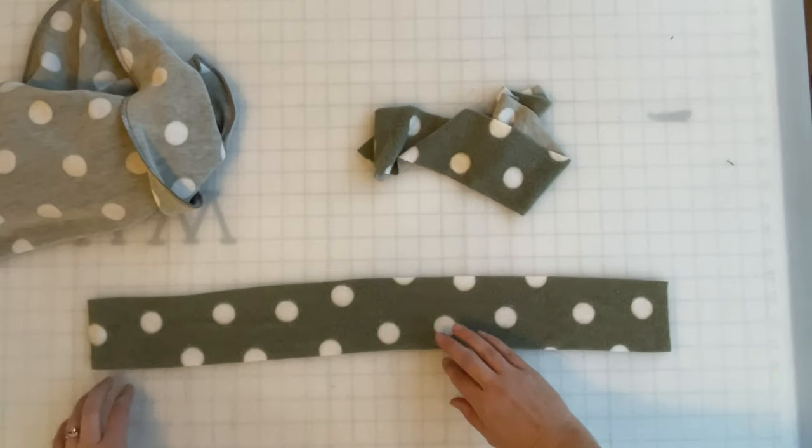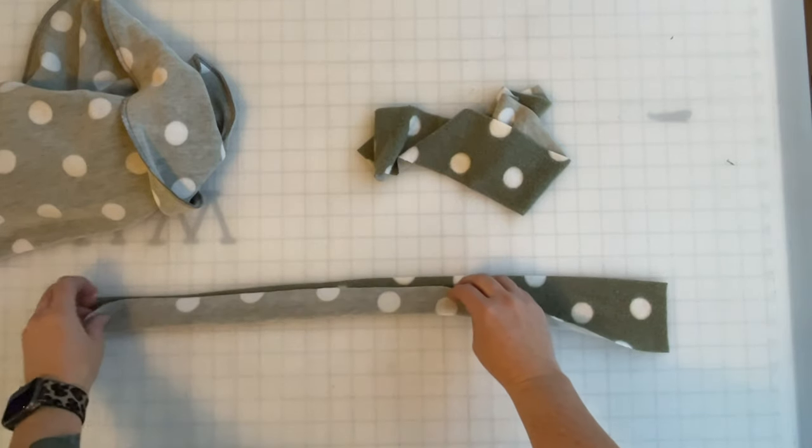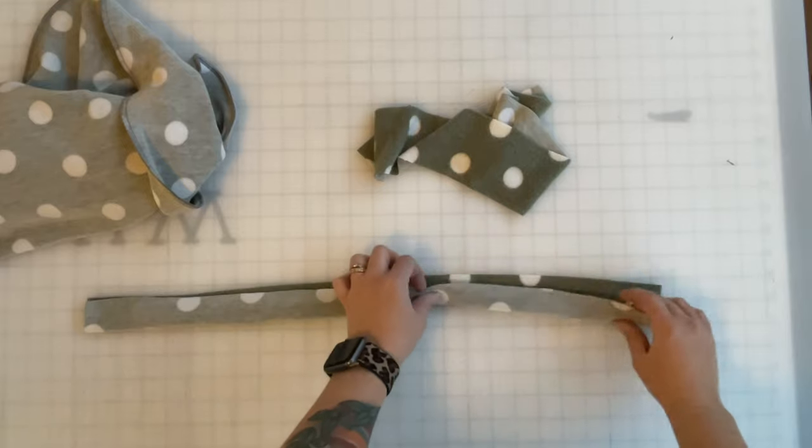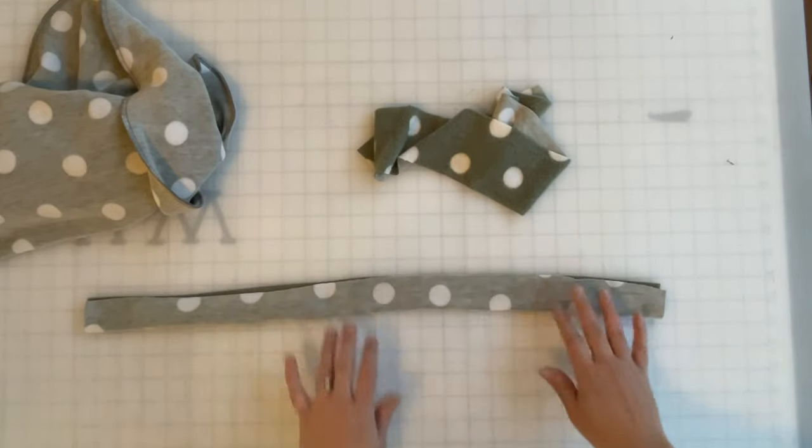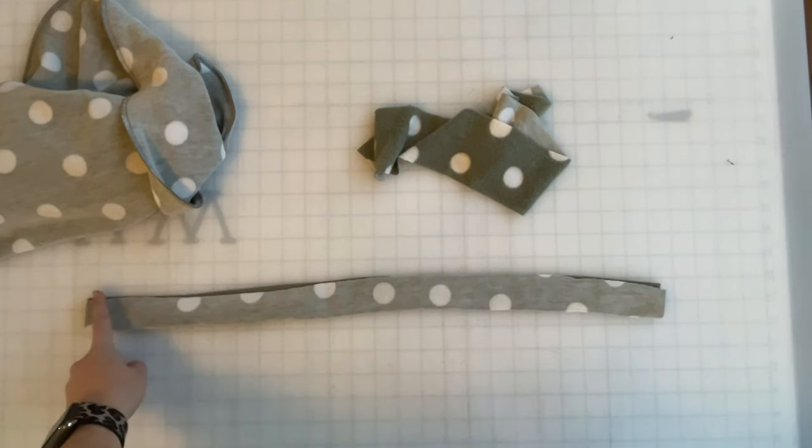We're going to fold it with right sides together and with the long edges touching each other. Fold it like a hot dog, not like a hamburger. Then we're going to be sewing along one short edge and the rest of the long edge, and we're going to do that on both pieces.